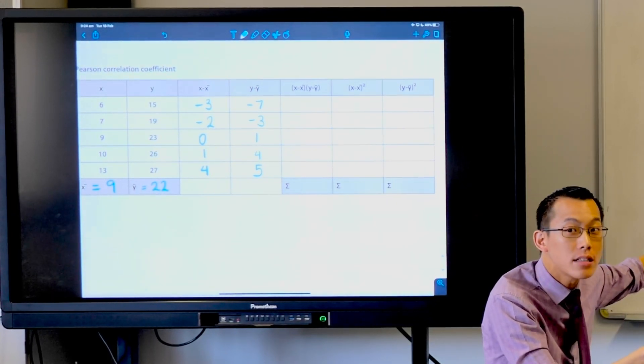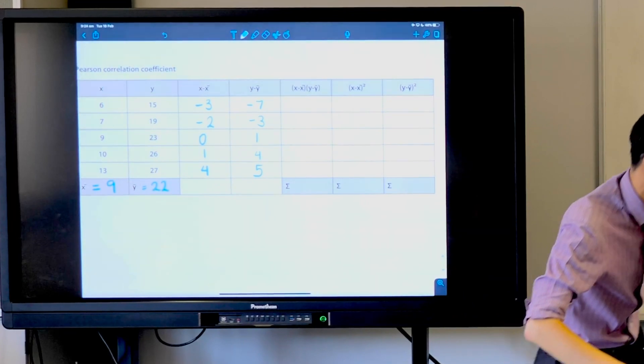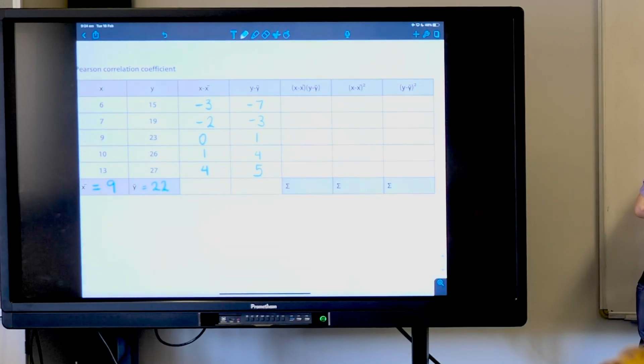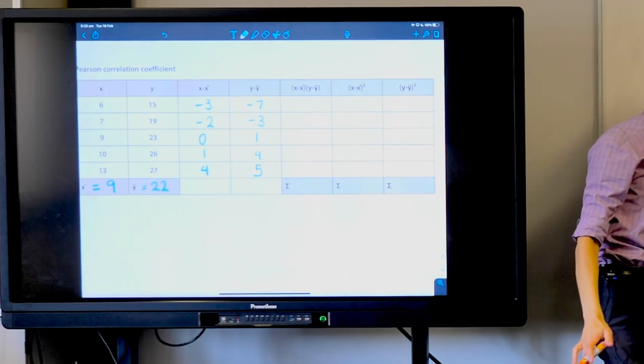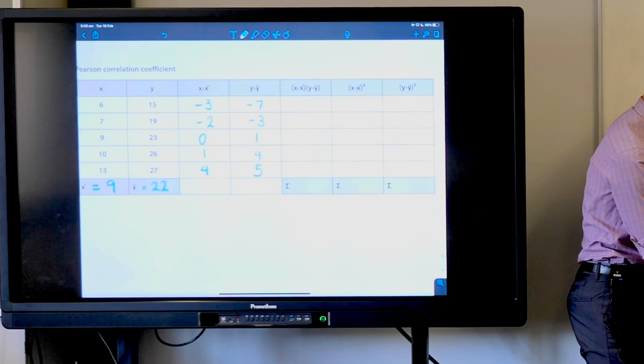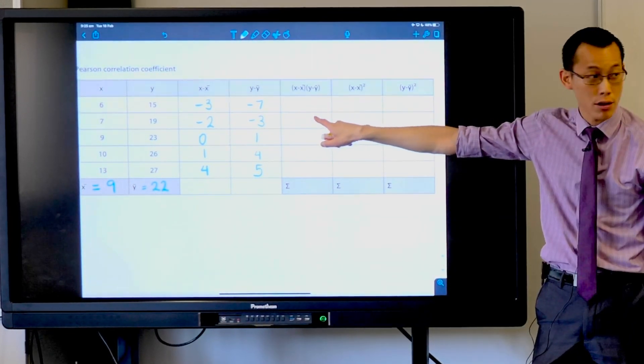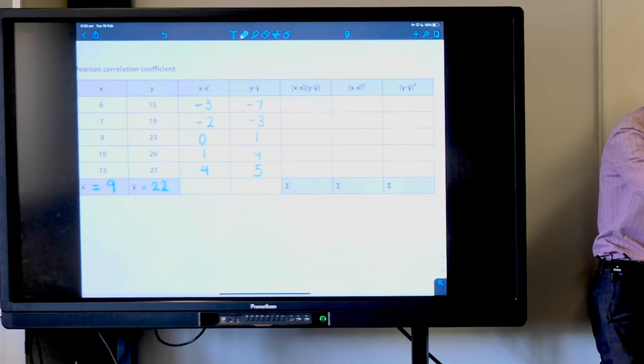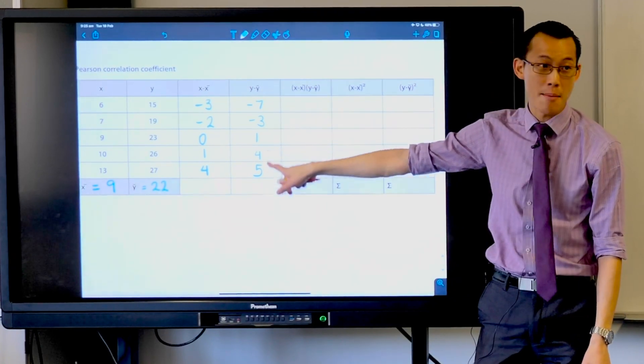We're adding a bunch of things. What things? We just worked out a whole column of x take away x-bar and y take away y-bar. What's the operation hiding in here that we don't write? It's multiplication. Take that product—you'll get a product here, here, and here. Once you've got all those products, you're going to add them up. Individually, I don't care what these add up to. I care about what happens when I multiply them together.